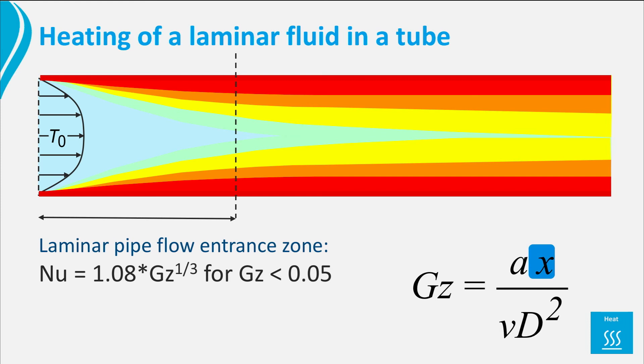At a certain point in the pipe, when the temperature profile is established, the Nusselt number becomes constant and there is no dependence anymore of the place in the tube.